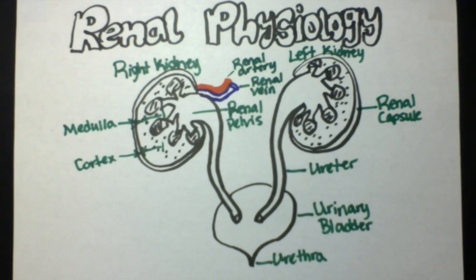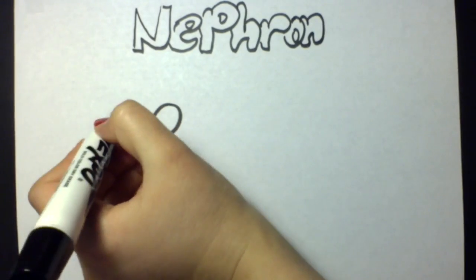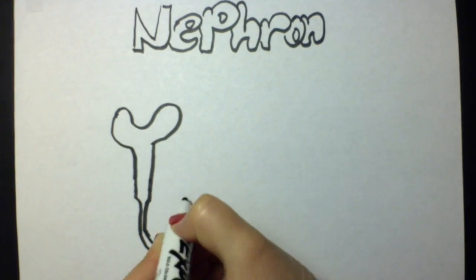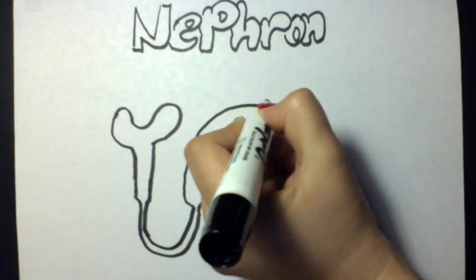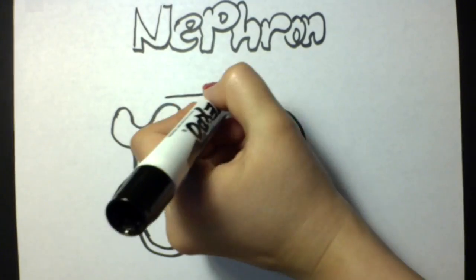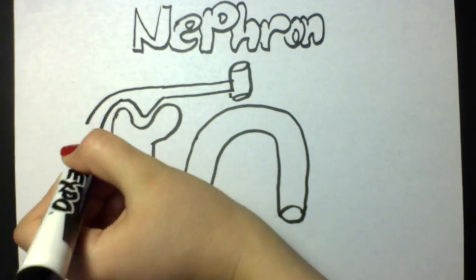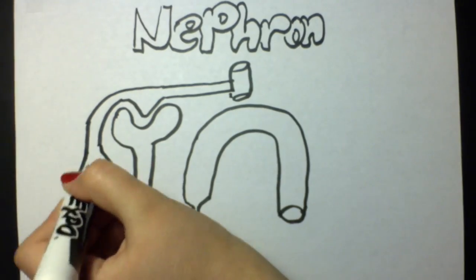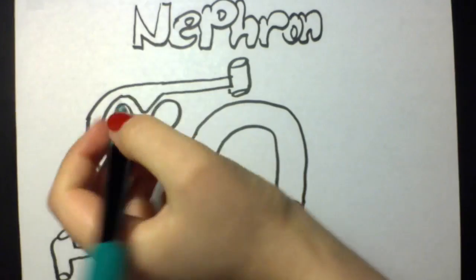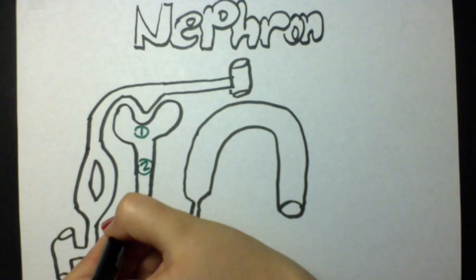The functional unit of the kidney is called a nephron. Each kidney has about a million nephrons, so together about two million nephrons exist in both kidneys. These nephrons consist of the Bowman's capsule.